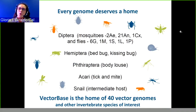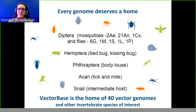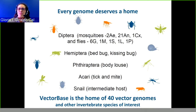This database is the home of genomes of arthropod vectors and pests. For example, we have Anopheles gambiae — the malaria mosquito — and Aedes aegypti, which has been in the news recently as the vector of Zika, chikungunya, dengue, and yellow fever. We also have other species of Diptera, Hemiptera, Thysanoptera, and Acari, as well as biologically related non-vector species and a snail — Biomphalaria — which is an intermediate host.